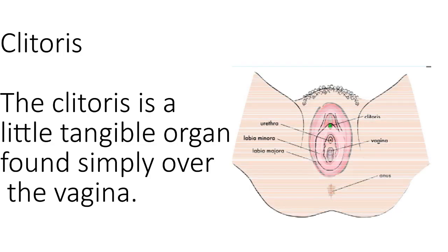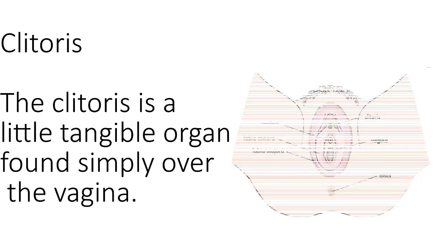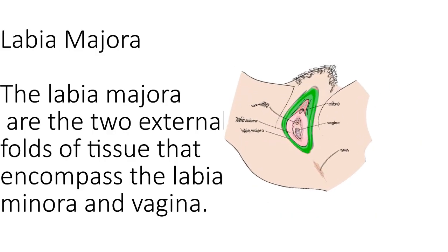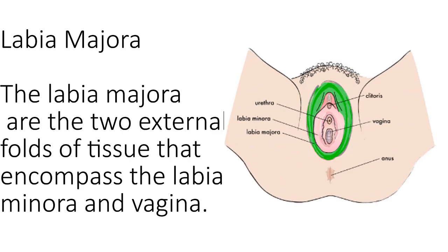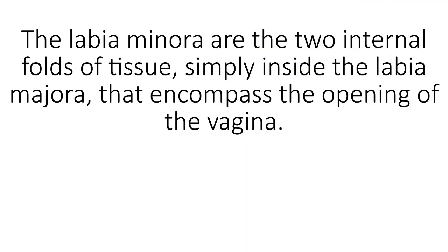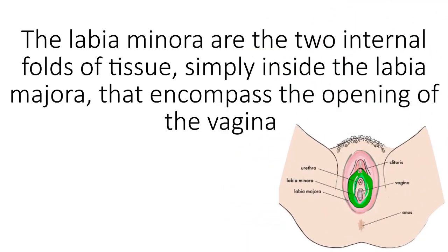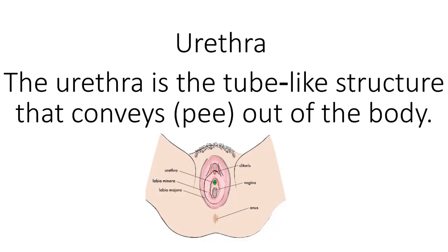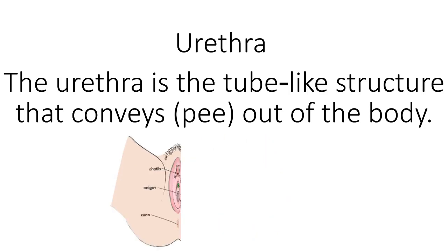Clitoris. The clitoris is a small sensory organ found just above the vagina. Labia majora. The labia majora are the two external folds of tissue that surround the labia minora and vagina. The labia minora are the two internal folds of tissue, just inside the labia majora, that surround the opening of the vagina. Urethra. The urethra is the tube-like structure that carries urine out of the body.